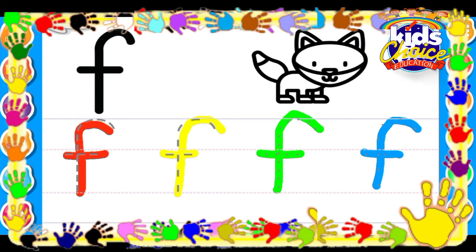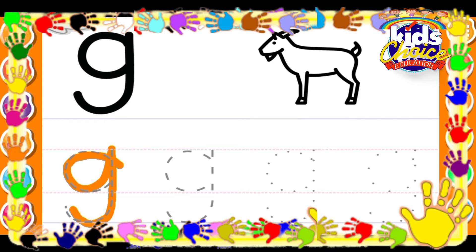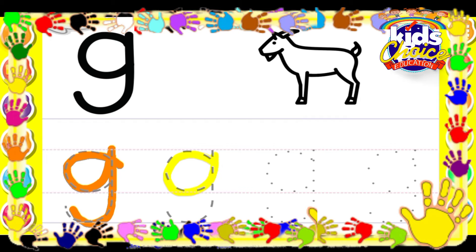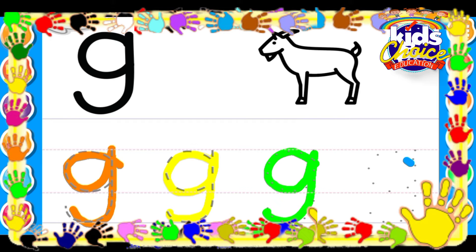G for Goat. Orange. Yellow. Green. Blue.